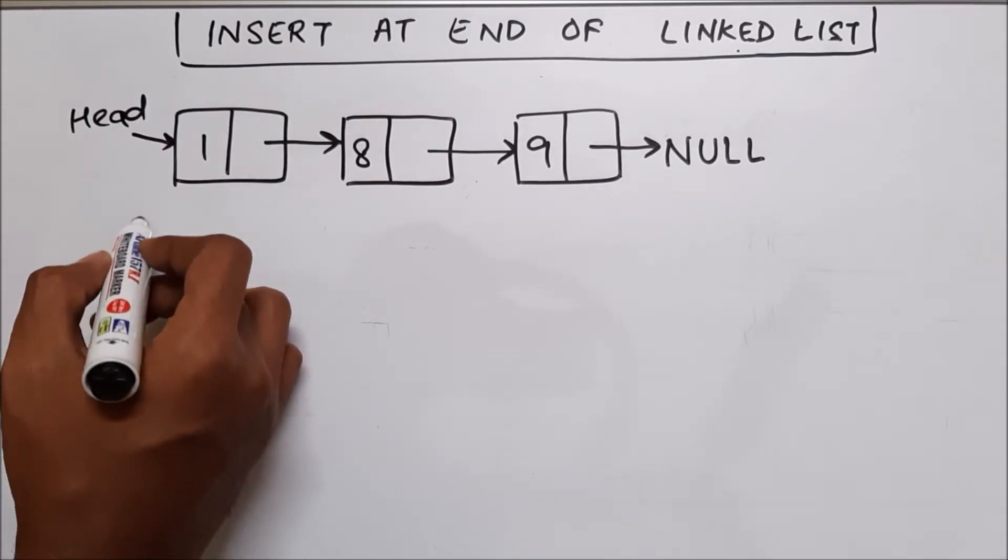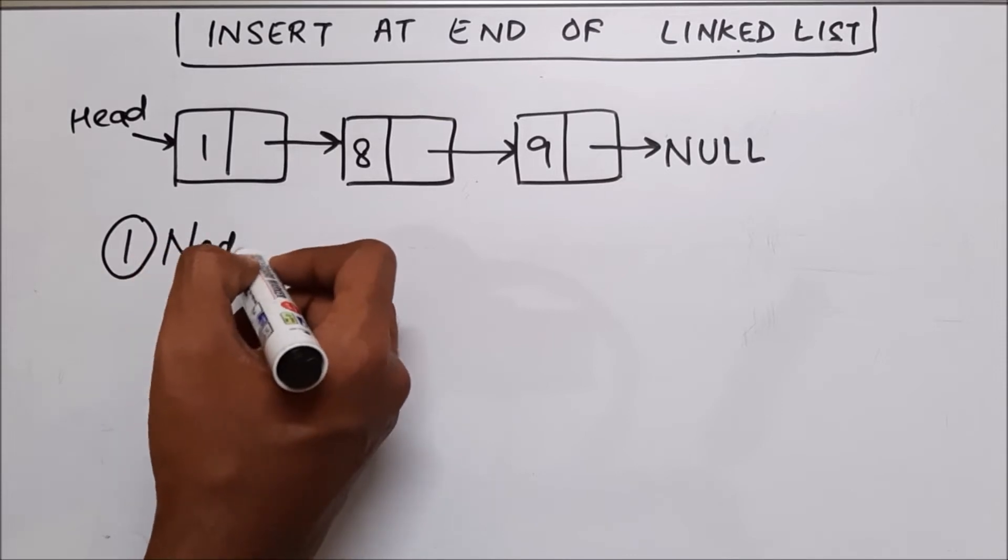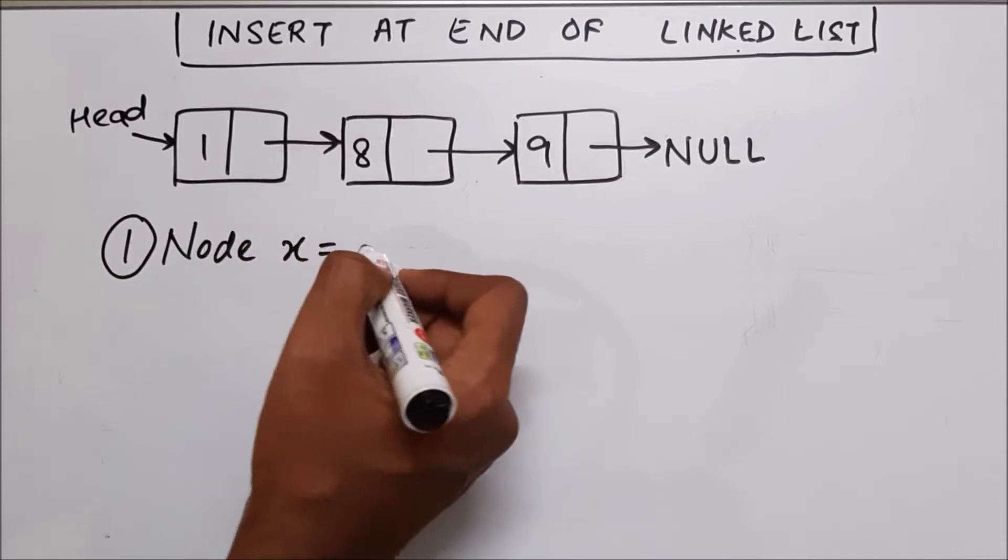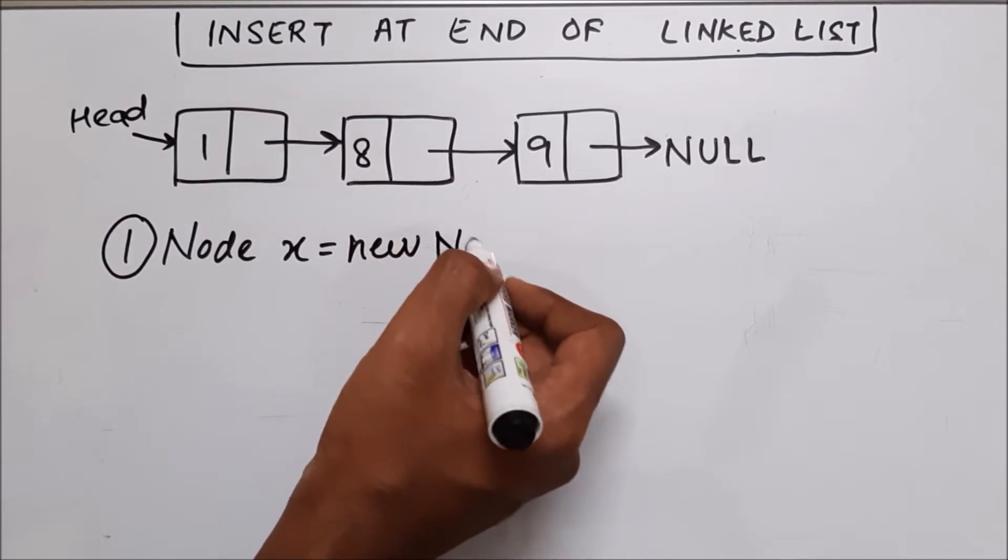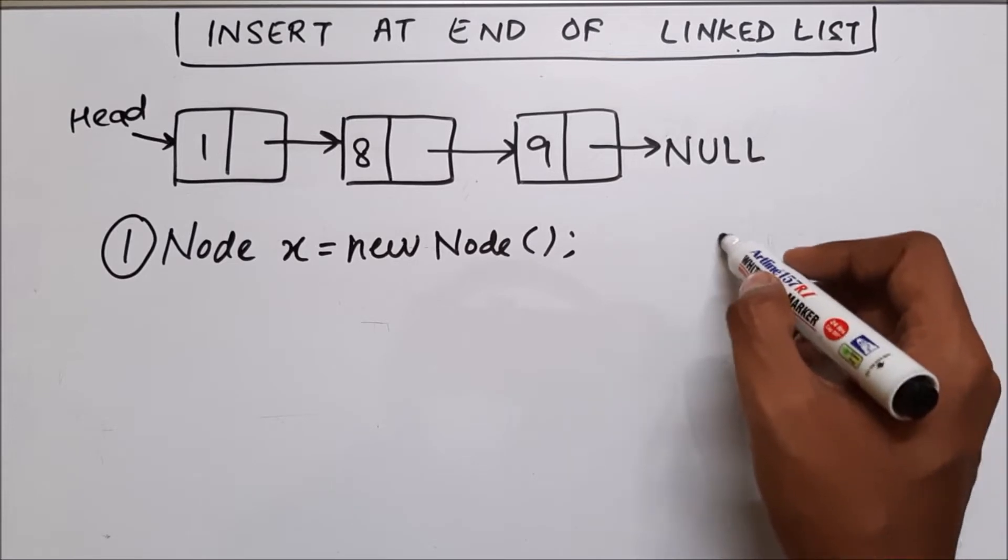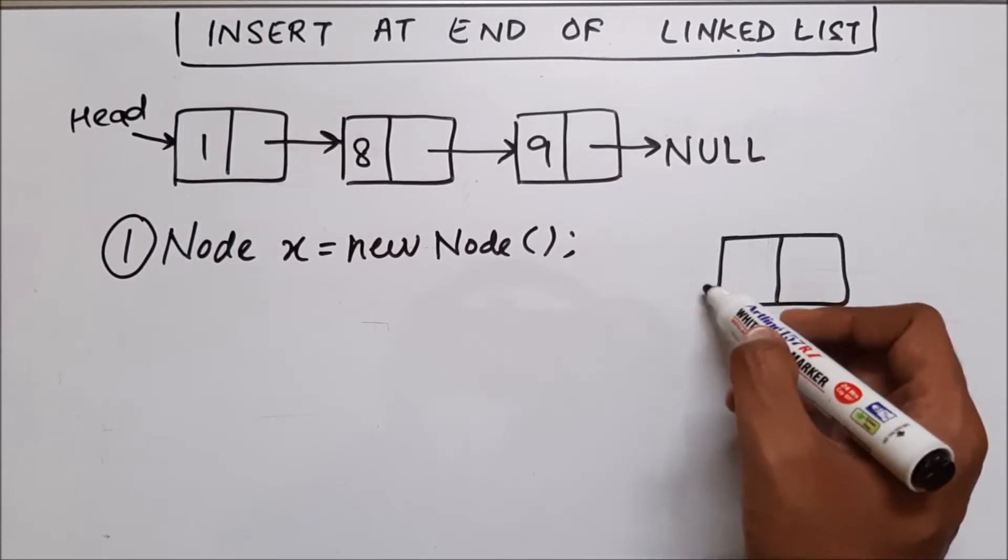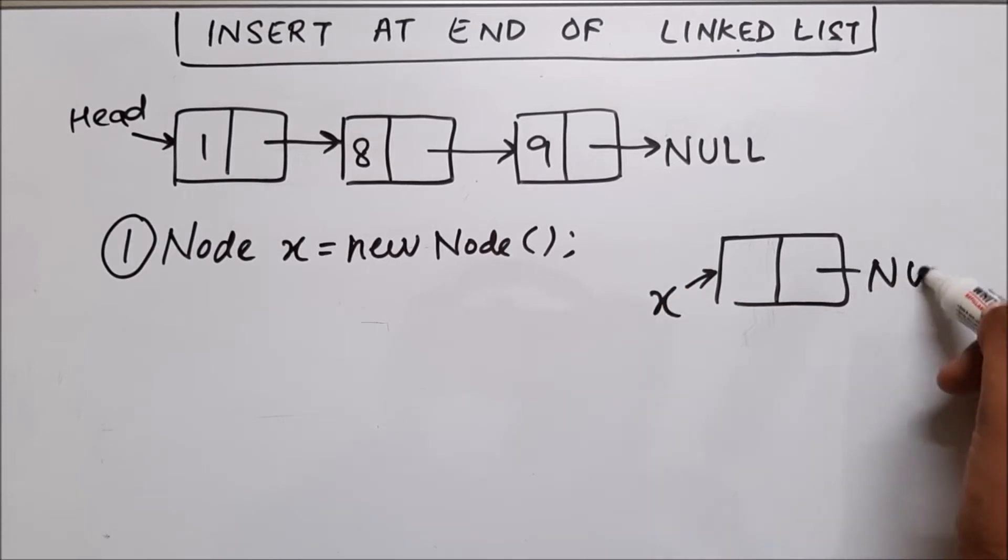So the first step in adding a new node is first we need to create a node. So let's say node x equal to new node. So now we have successfully created a node and this is x and this has null.